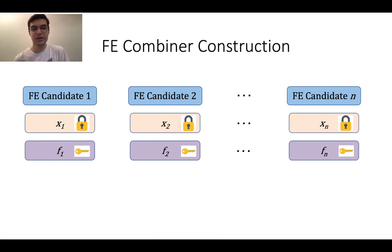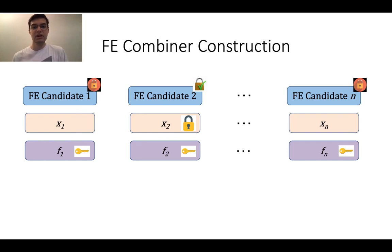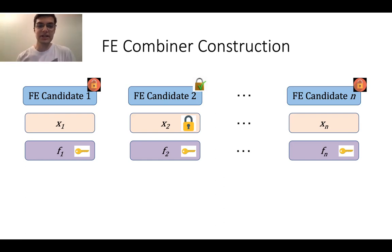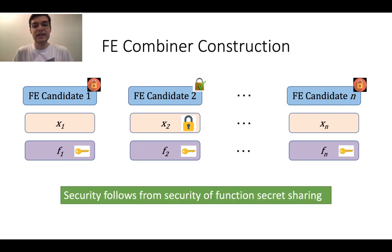To argue security: if all but one FE candidate is broken — say the second candidate is secure but all others are broken — then the adversary can potentially learn all input shares except the second one. The second input share remains secure. We observe that we're in a situation analogous to FSS security: the adversary possesses descriptions of all functions (since function keys don't hide function descriptions) and all input shares except x2. Using the underlying FSS security and various techniques, it is possible to prove security of this construction.